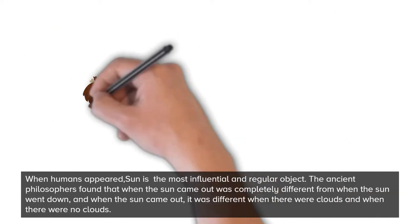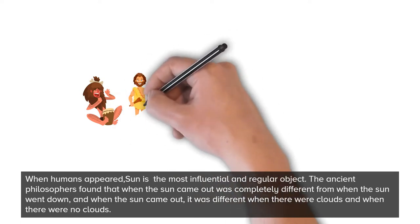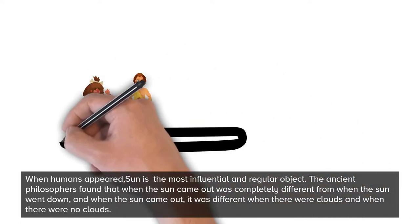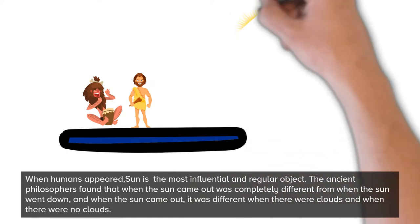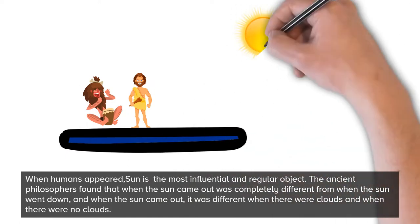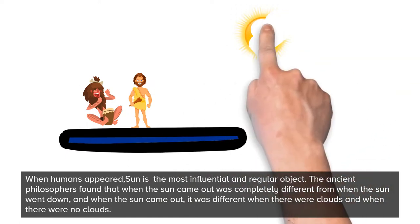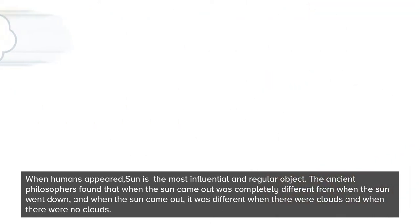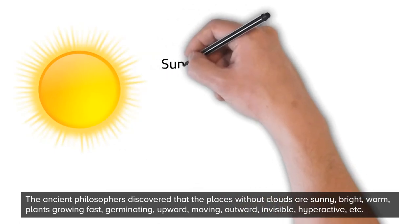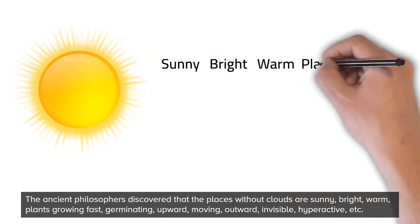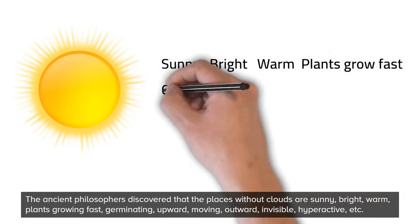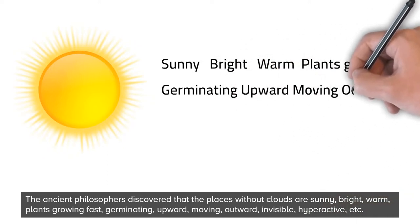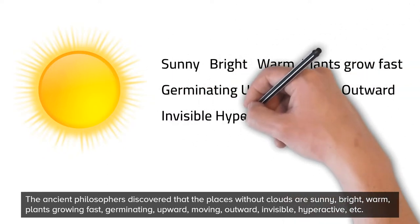When humans appeared, the sun was the most influential and regular object. The ancient philosophers found that when the sun came out it was completely different from when the sun went down, and when the sun came out it was different when there were clouds versus no clouds. They discovered that places without clouds are sunny, bright, and warm, with plants growing fast, germinating, upward, moving, outward, invisible, and hyperactive.